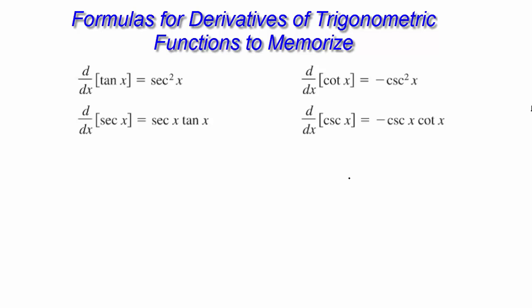I also want to add something to this page, which is the two trig functions that we already learned. The derivative with respect to x of sine of x is equal to cosine of x. And the derivative with respect to x of cosine of x is negative sine of x.